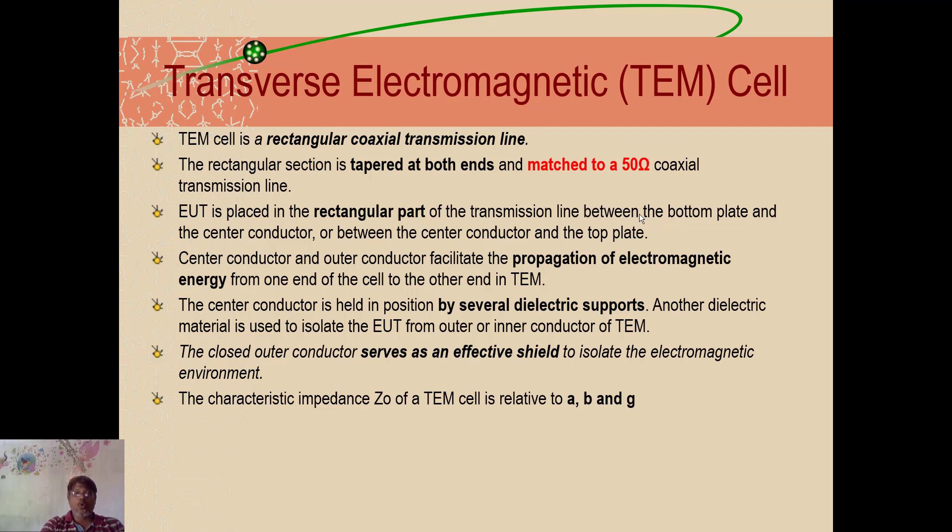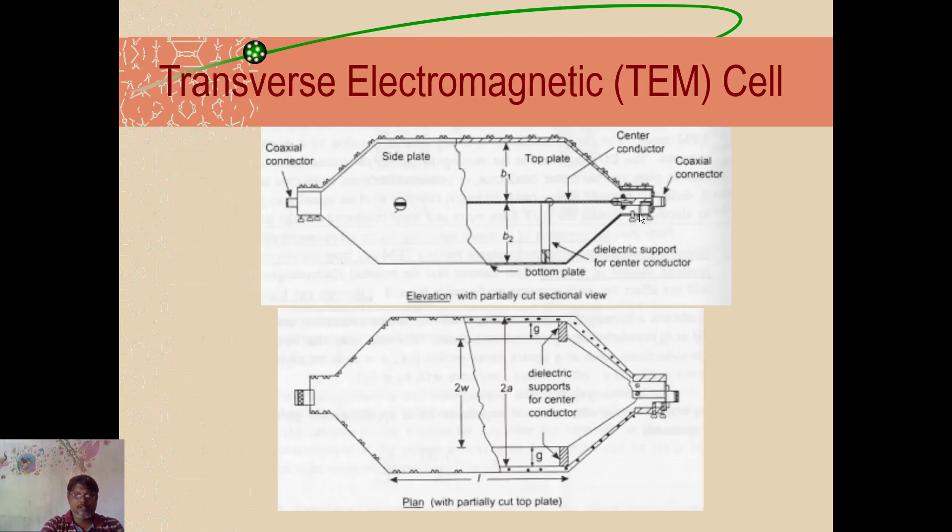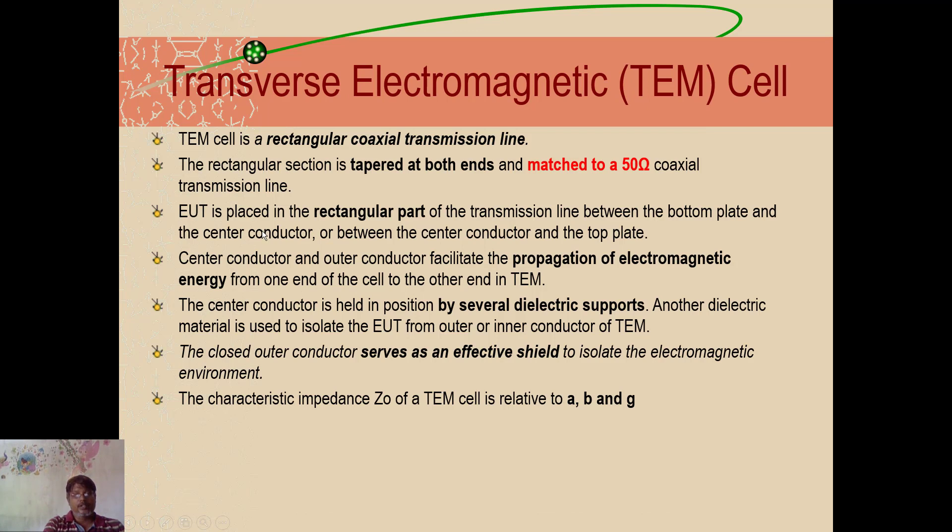The TEM cell is a rectangular coaxial transmission line. The rectangular section is tapered at both end and matched to 50 ohm coaxial transmission line. This is a rectangular transmission line, here one transmission line and here one transmission line, both the side it is tapered. You can see both the side it is tapered. And then connected to 50 ohm matching network. And the equipment is placed in a rectangular part of it. In the center part, you have to keep.